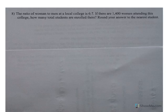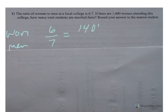Number 8, the ratio of women to men at a local college. Women to men is 6 to 7. If there are 1,400 women, how many total students are there? It says total students. If I figure out the men and then add men and women, I'm good.